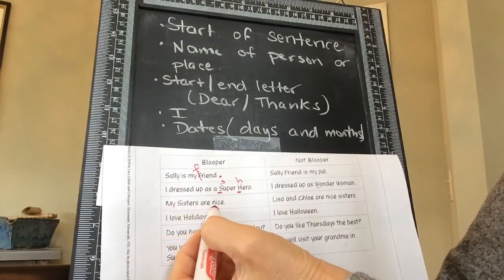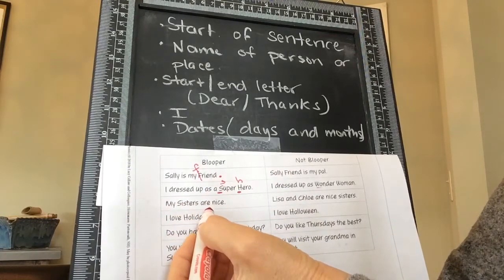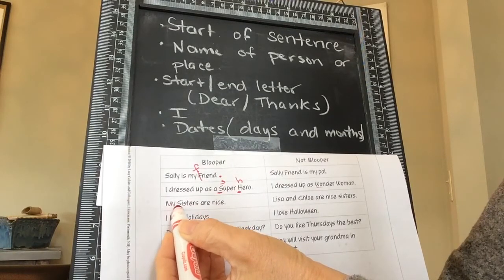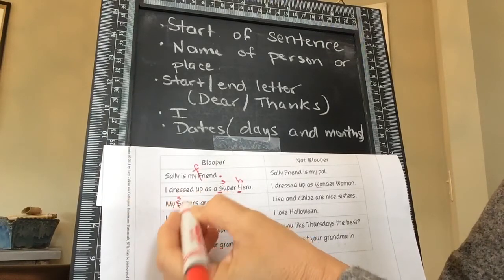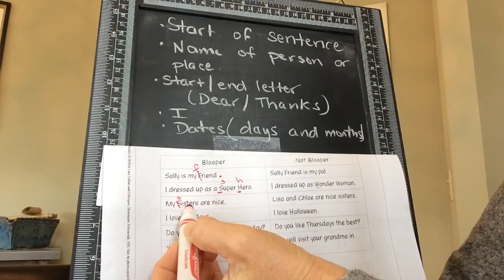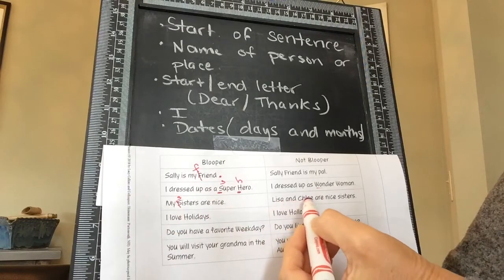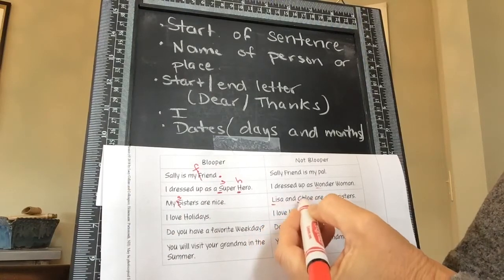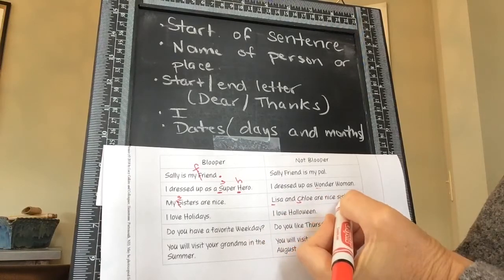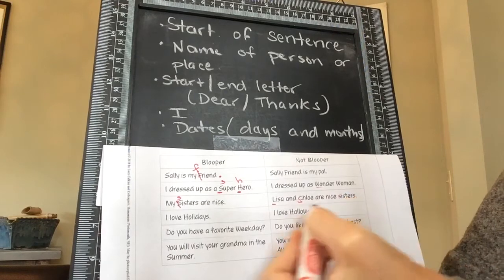This one says, 'My Sisters are nice.' The M should be uppercase because it's the beginning of the sentence. Should the S be uppercase? No, it's not saying their names — that's just who they are in the family. But here they said 'Lisa and Chloe are nice sisters.' Lisa and Chloe should be uppercase because those are their actual names. The word 'sisters' is not uppercase here because you wouldn't uppercase that unless it was the beginning of the sentence.